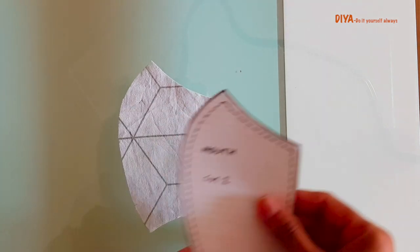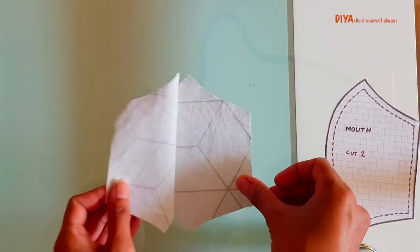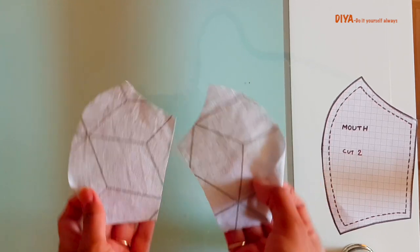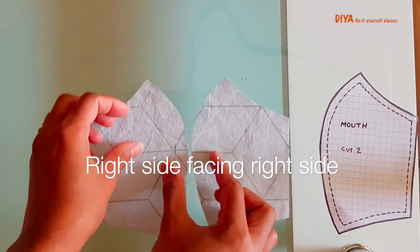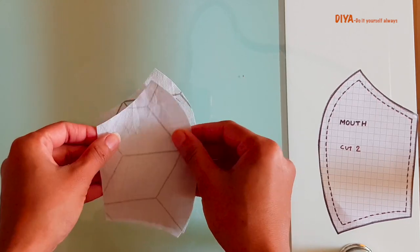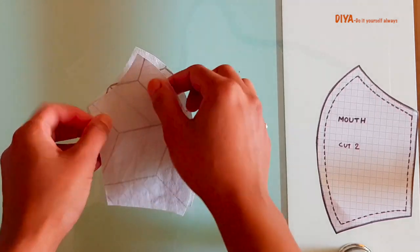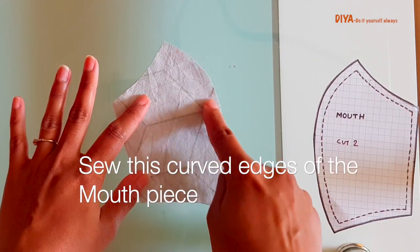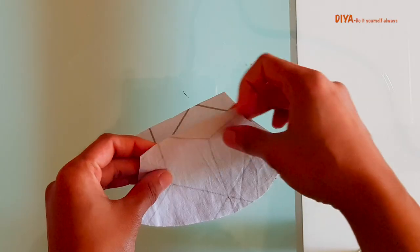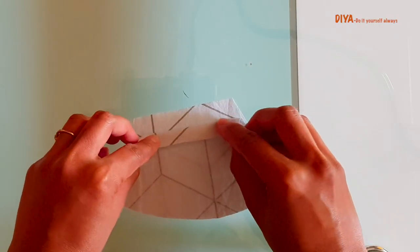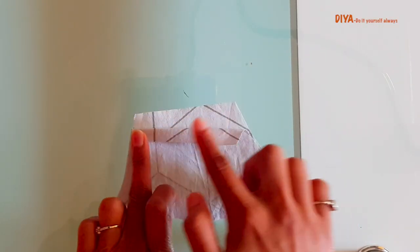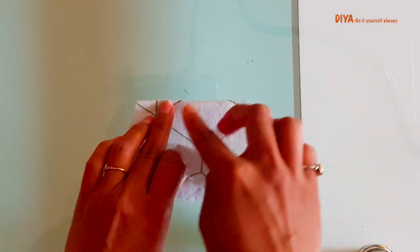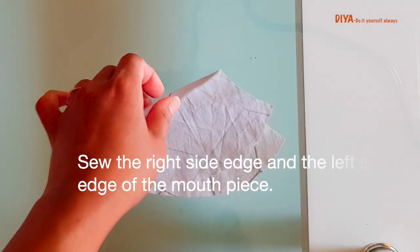After you finish the face curve seam, move on to the mouth curved seam. These are the two pieces. Again we need to place it like the right side faces the right side, like this. Then we'll sew this curved part here. I am finger pressing the edges of this mouth piece. Both the sides, right and left, you need to finger press the edges and then sew the part.